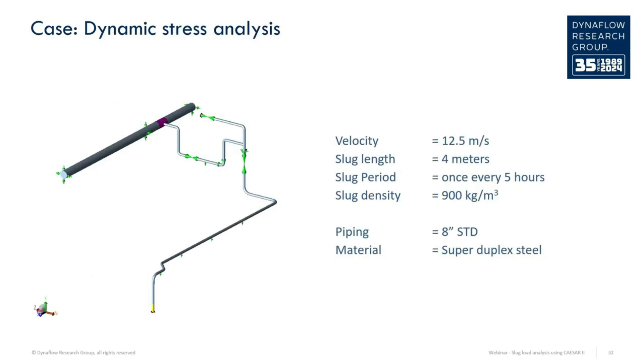For the dynamic stress analysis of slugs, the timing of the slug gets important. No DLF is used here since the dynamic behavior of the slug is included in the model itself. As a reminder, the slug velocity in the example is 12.5 meters per second and the slug length is 4 meters. This means that an elbow is affected by the slug for about 0.3 seconds.